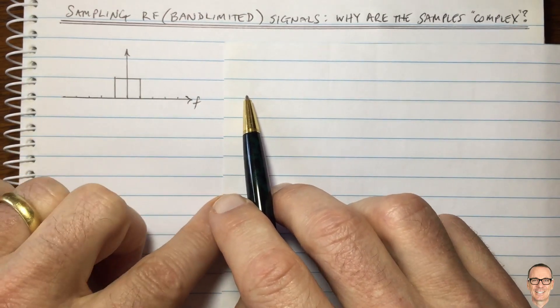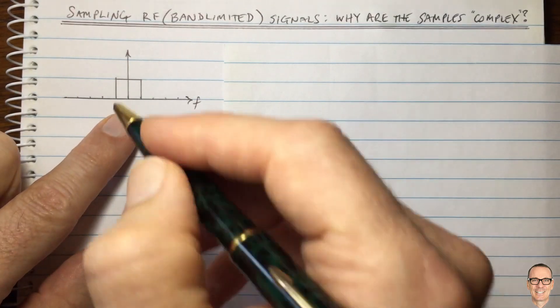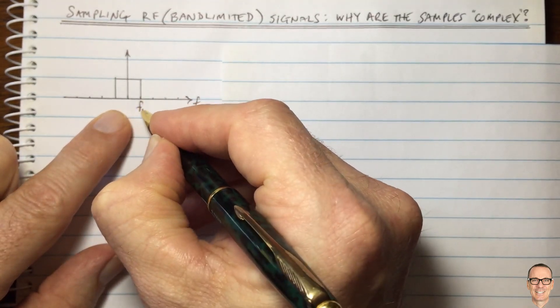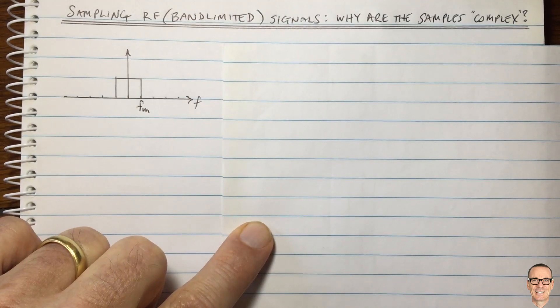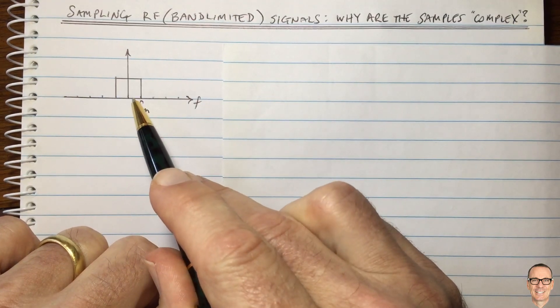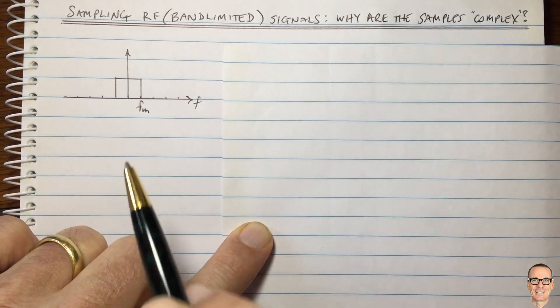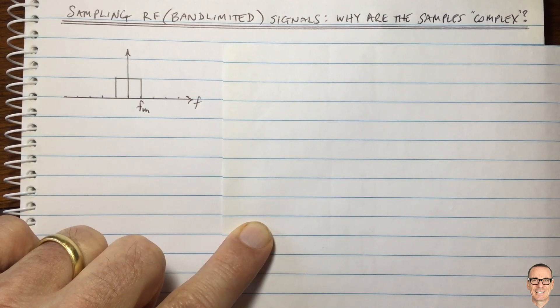Let's start by looking at a baseband signal. Here's a baseband signal in the frequency domain, where we have a maximum frequency shown here, we call FM.